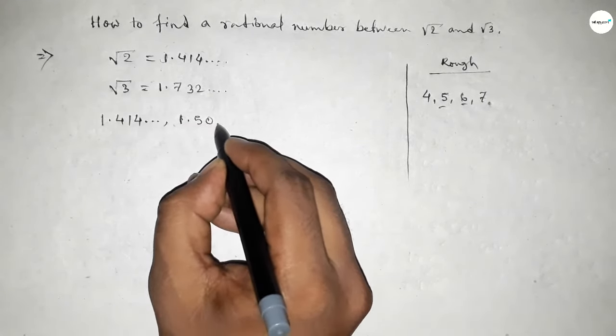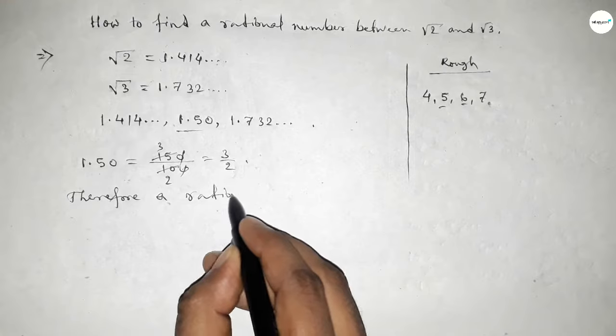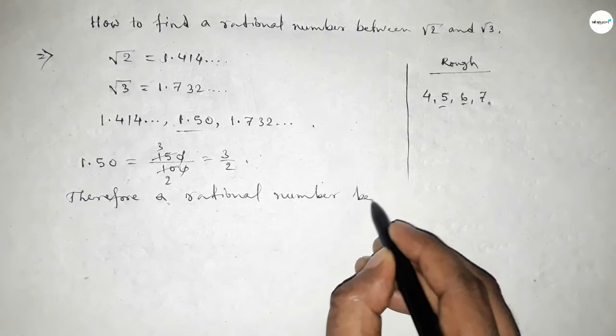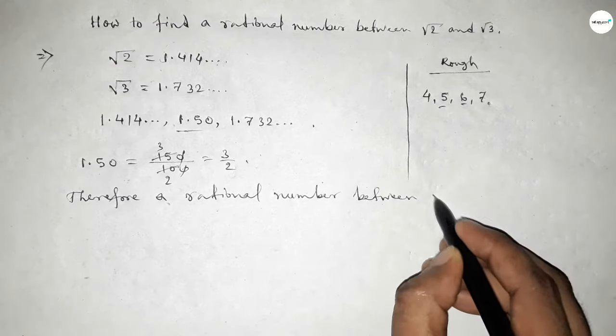Now simplifying, 1.50 = 150/100. Dividing both numbers by 5, this is 3/2, and this is a rational number. Therefore, a rational number between √2 and √3 is 3/2.